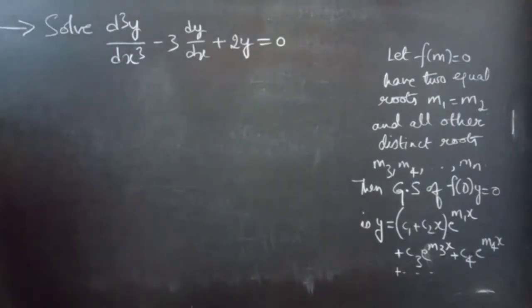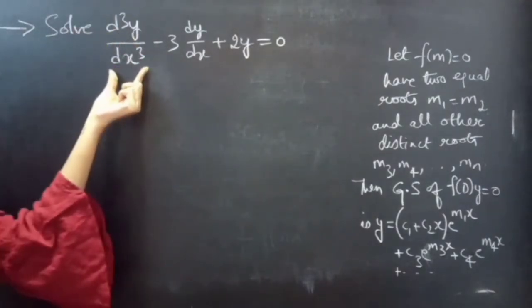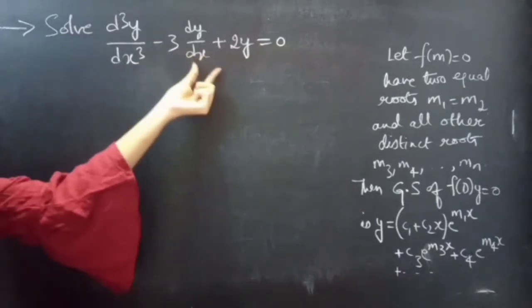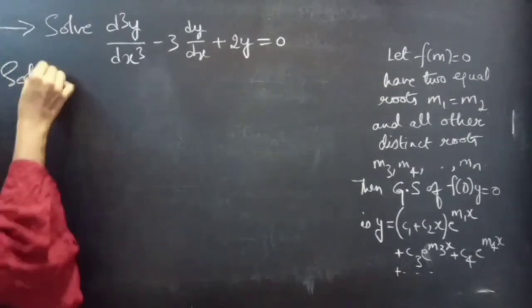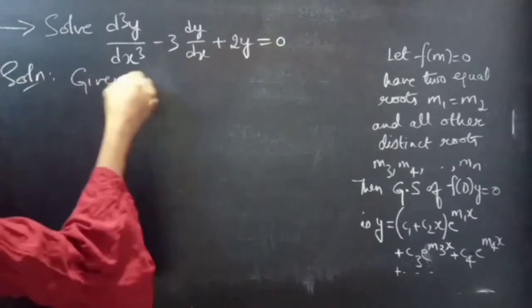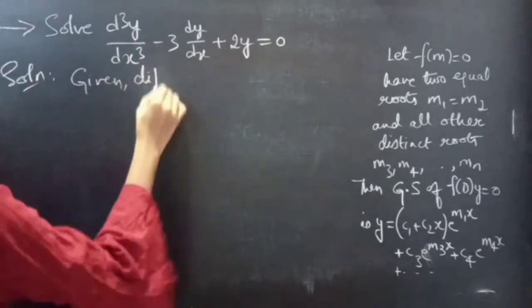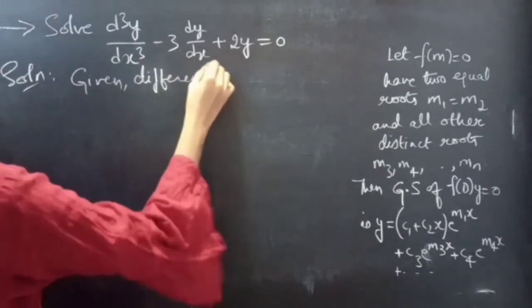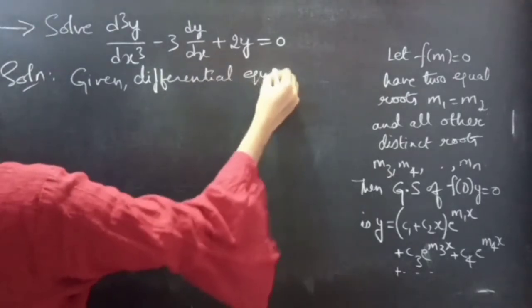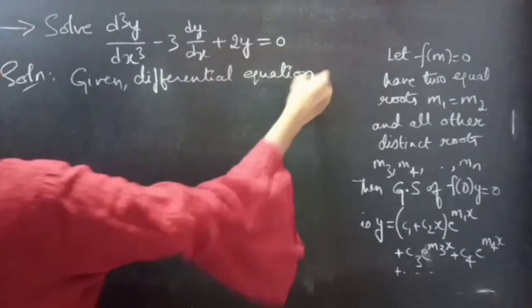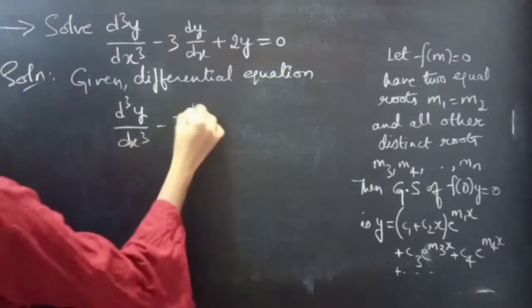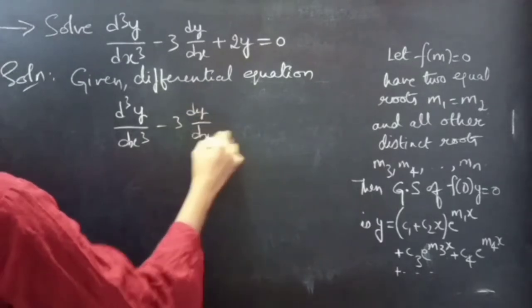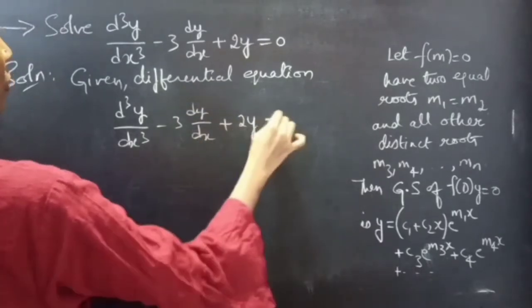Problem: Solve d cubed y by dx cubed minus 3 into dy by dx plus 2y equals to 0.